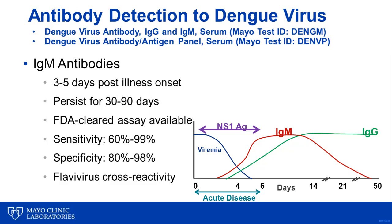The final diagnostic method to discuss is standard serology for detection of IgM and IgG class antibodies to dengue virus. Starting with IgM, it takes roughly three to five days following illness onset for this antibody class to become detectable, and they can remain detectable anywhere from 30 to even 90 days following infection. Additionally, in cases of reinfection, IgM levels are notoriously low and short-lived, making diagnosis of subsequent dengue virus infections based on IgM antibodies alone challenging.